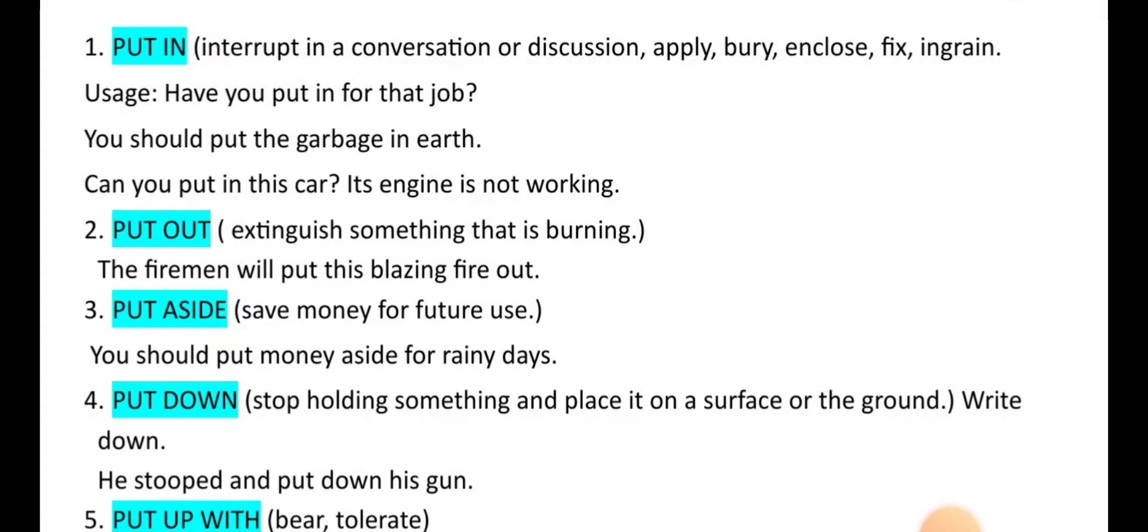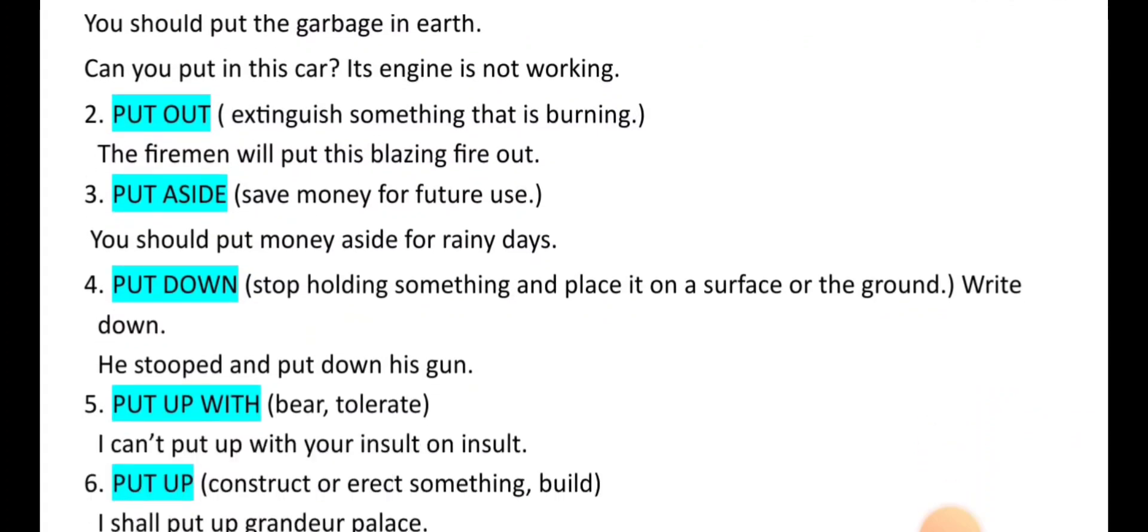Put down means stop holding something and place it on the surface or the ground. Write down can also be another meaning. Put down means to place something down, write down means to write. You can use put down something on paper—meaning write something on paper. Both meanings are possible according to the situation of the sentence. For example: He stopped and put down his gun.